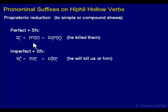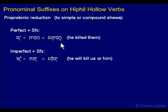So if you add a pronominal suffix — let's do it to a perfect here — so hemeet, this is a perfect Hiphil, plus am, the third masculine plural ending. Hemeet plus am is hemeetam, so the tsere has reduced to a chataf segol, a compound sheva. He killed them.